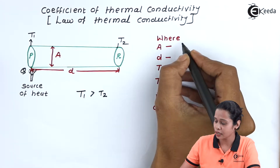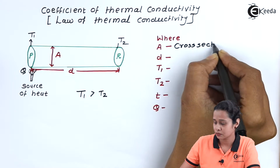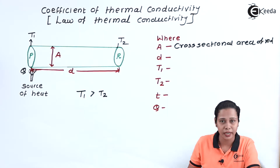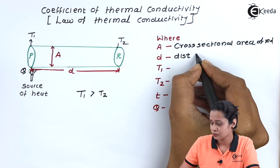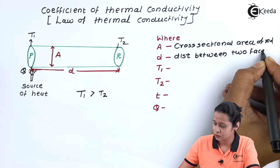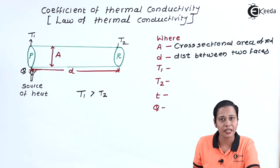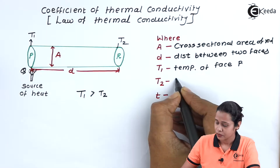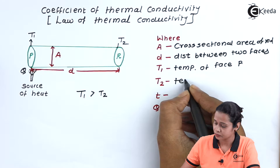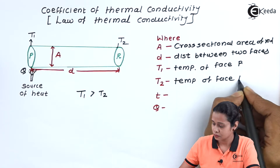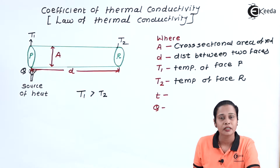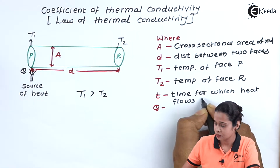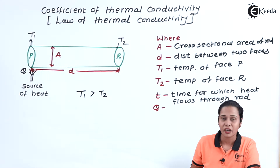Let us write down the quantities. A is the cross-sectional area. D is the distance between both ends. T1 is the temperature at the first end. T2 is the temperature of the second face, that is R. Small t is the time for which heat flows. And Q is the heat energy.